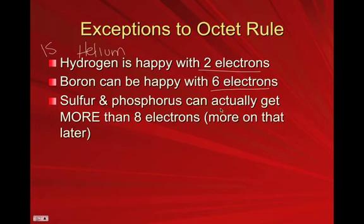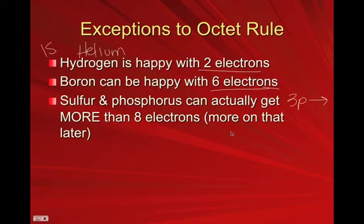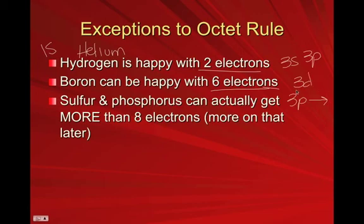Boron is strange in that it can only have six electrons. And then sulfur, phosphorus, and really any 3p element and beyond — 3p, 4p, 5p, 6p, 7p — are actually capable of holding more than eight electrons. This makes sense because if you have a third or higher energy level element, you have your 3s and 3p electrons, and then an absolutely empty 3d sublevel. Even though nothing has been put in it, it still exists and can be used to store excess electrons.